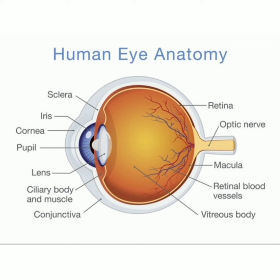While most of the focusing of light is done by the cornea, the lens allows the eye to focus on an object. Ciliary muscles surround the lens, relaxing to flatten it to see distant objects.